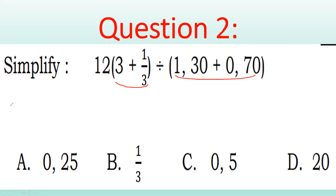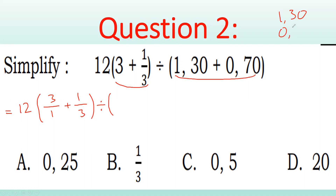Let's start. Equals 12 times — I can write 3 as 3/1 plus 1/3, so I can make the denominators equal. Then divide by: I'm going to get 1/3 + 0.70. Let's handle 0.70: before the decimal, 0 plus 0, and after the decimal 3 plus 7 is 10. Carry the one over, giving us 2.00, which equals 2.